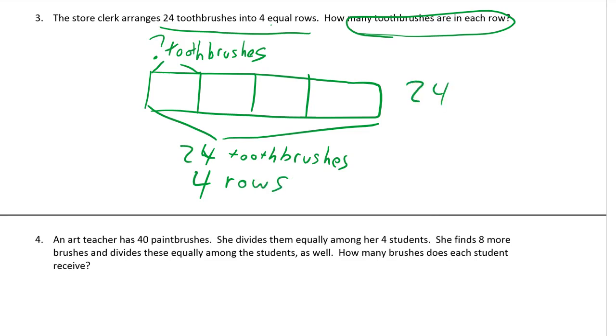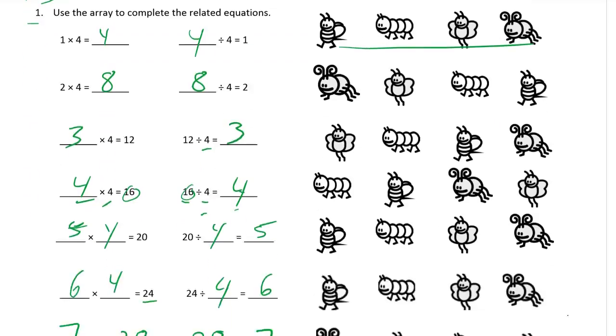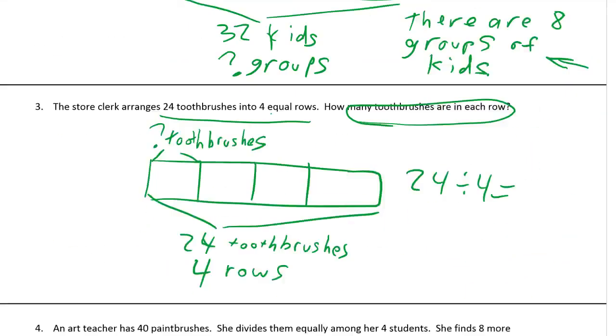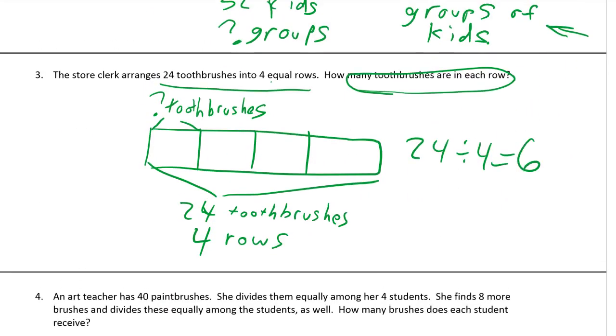And we know that there are four equal rows. So we use the numbers we have. Twenty-four. We divide it into four rows. You look it up on the first page. Twenty-four divided by four. It's one of these. Here it is. It's six. There are six toothbrushes in each row.